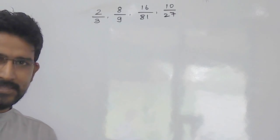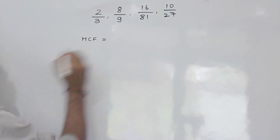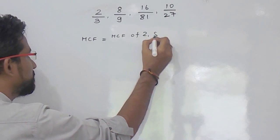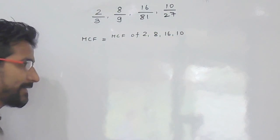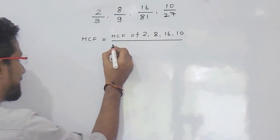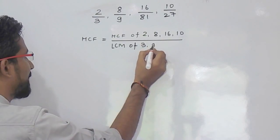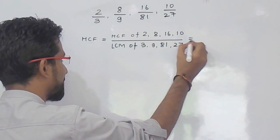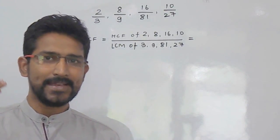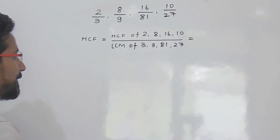So if you want to find out the HCF of these fractions, the HCF will be nothing but the HCF of the numerators — that is 2, 8, 16, and 10 — divided by the LCM of the denominators — that is 3, 9, 81, and 27. So when you have to calculate the HCF of a fraction, you take the HCF of the numerators and the LCM of the denominators.